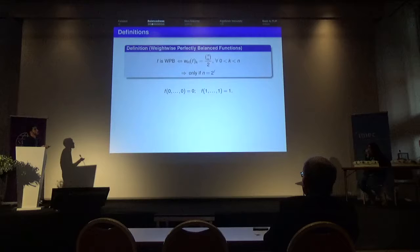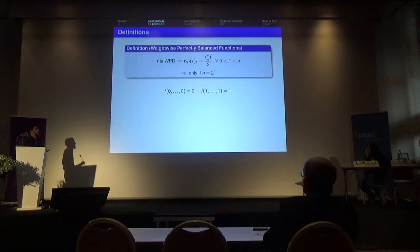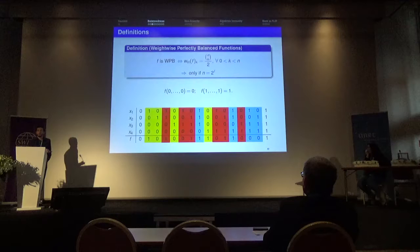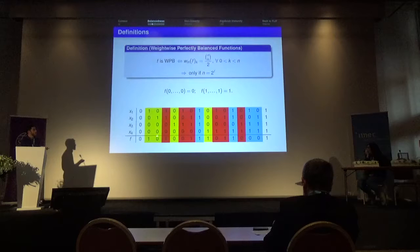To also have a Boolean function balanced on the whole domain, we impose that Hamming weight zero gives output zero and Hamming weight n gives output one, since there is only one element of each. For example, this Boolean function on four variables is balanced on the whole domain: restricted to Hamming weight one there are two ones and two zeros, the same holds for Hamming weight three, and restricted to Hamming weight two there are three ones and three zeros. So this function is a weight-wise perfectly balanced function.